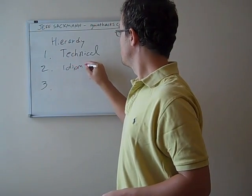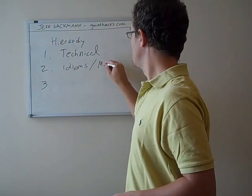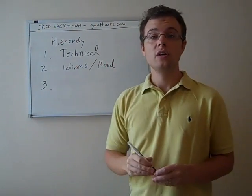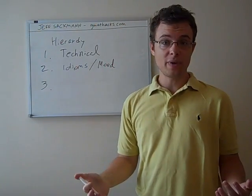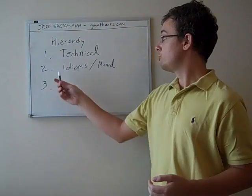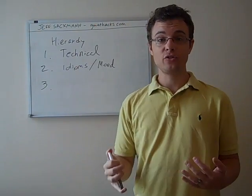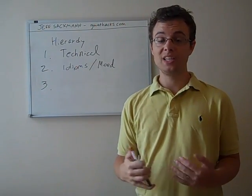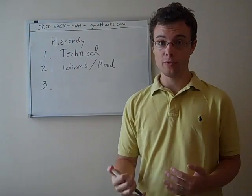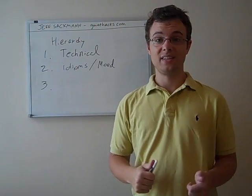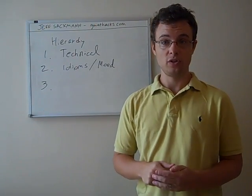So the second level of the hierarchy is idioms and mood. If you've been studying GMAT sentence correction for very long, I'm sure you've heard a lot about idioms. Especially if English is not your first language, idioms are tricky because they are somewhat arbitrary.